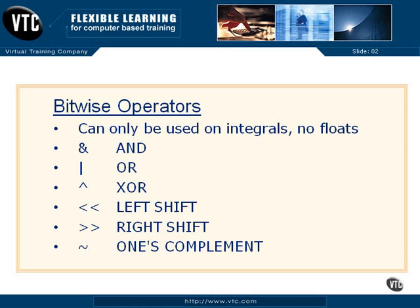Don't worry if you don't understand these right now — you may not ever even use them in your C programming career. These are mostly used by people programming C in an embedded format, writing programs that go inside appliances, cars, or machinery where they need to check values of registers to see if a motor is running or a certain temperature is set. They set, look at, and change bits and move binary values around inside these variables. That's why these things are in the language.